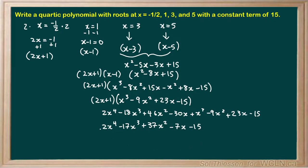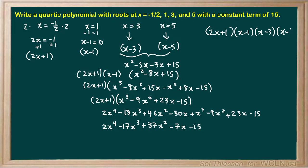We have our expanded polynomial, but the constant term is negative 15, not positive 15 as required. So we need to multiply through by negative 1, which won't change the roots. The factored form becomes negative 1 times (2x plus 1)(x minus 1)(x minus 3)(x minus 5). The expanded result is negative 2x to the 4th plus 17x cubed minus 37x squared plus 7x plus 15.